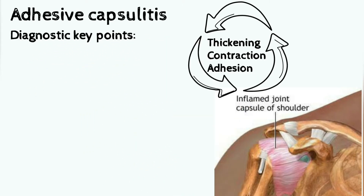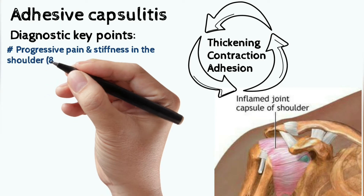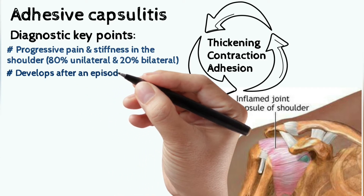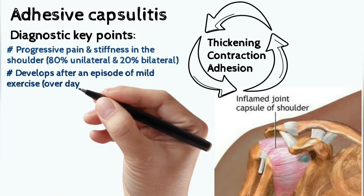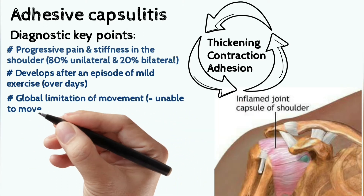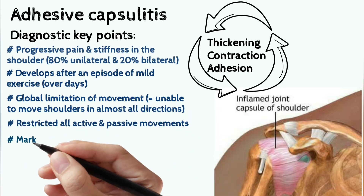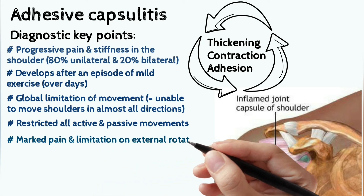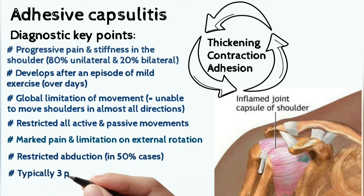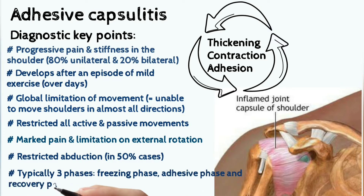Diagnostic key points of adhesive capsulitis are progressive pain and stiffness in the shoulder. 80% are unilateral and 20% bilateral. It develops after an episode of mild exercise, developing over days, with global limitation of movement — meaning the patient is unable to move the shoulder in almost all directions. There are restricted active and passive movements, marked pain and limitation of external rotation, restricted abduction in 50% of cases, and typically three phases: freezing phase, adhesive phase, and recovery phase.